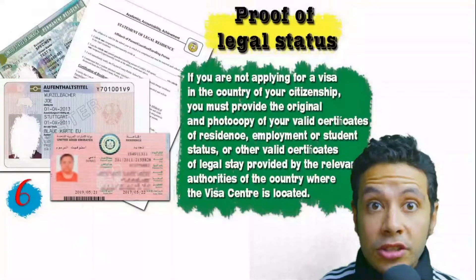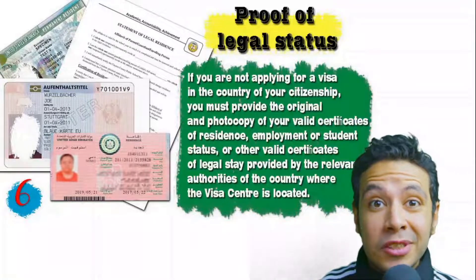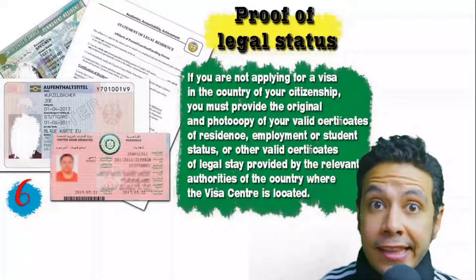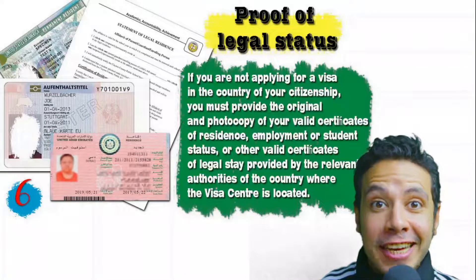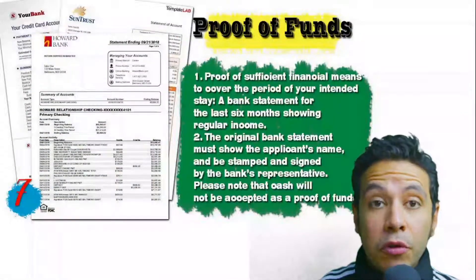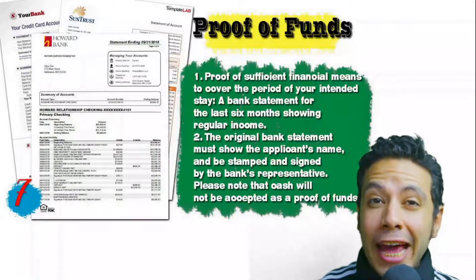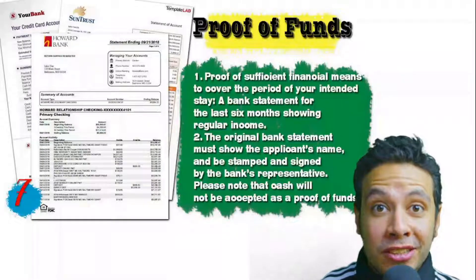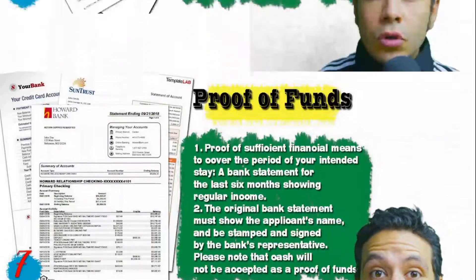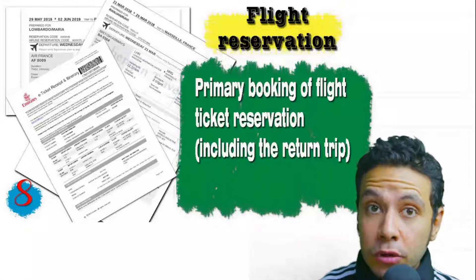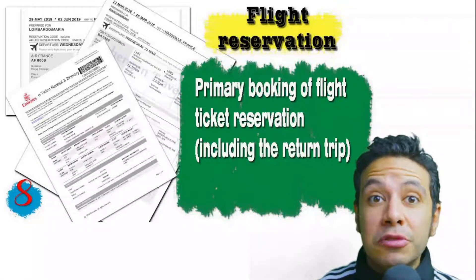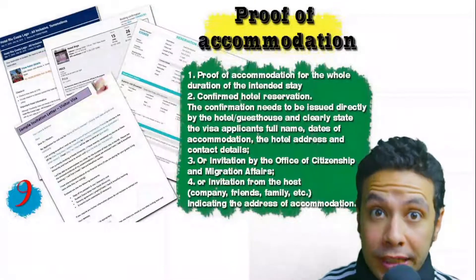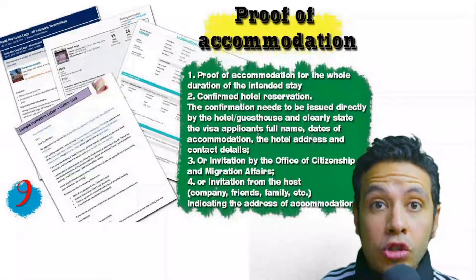If you are applying from a country different from your own, you will need to provide proof of legal residence in that country, and in some cases a valid residence visa can also be accepted. You also need a bank statement showing your balance for at least six months — it must show your name, be signed and stamped by the bank, and cash will not be accepted. You should also provide a flight reservation, which can be an initial booking, but must include a return ticket.